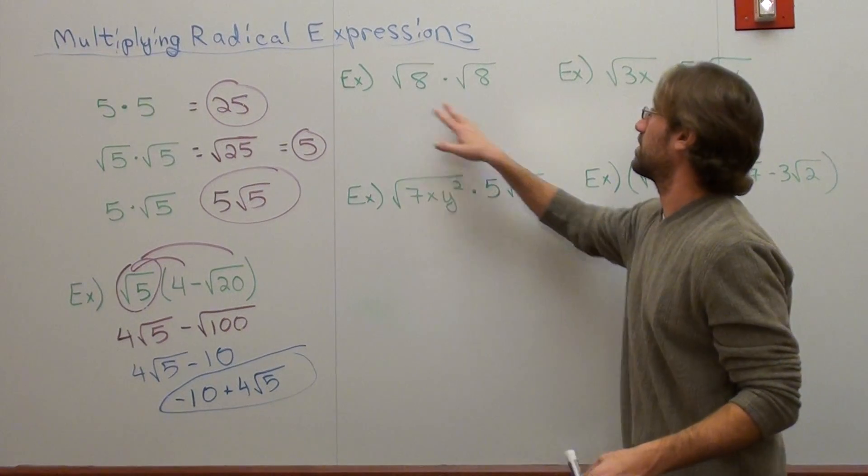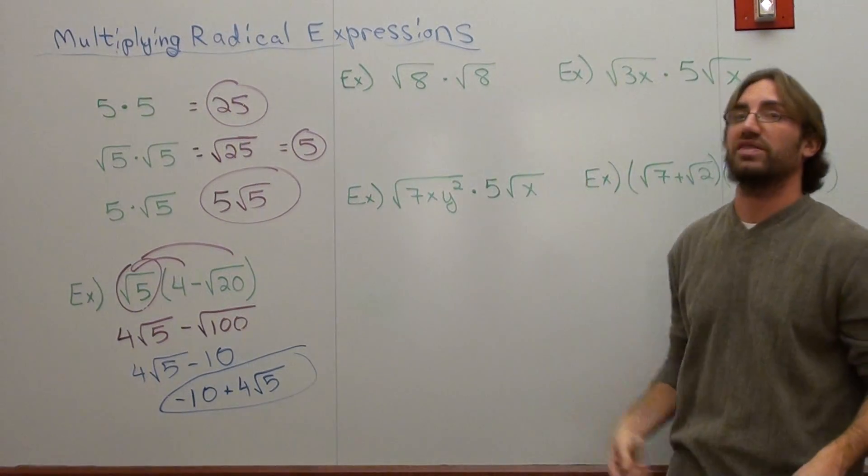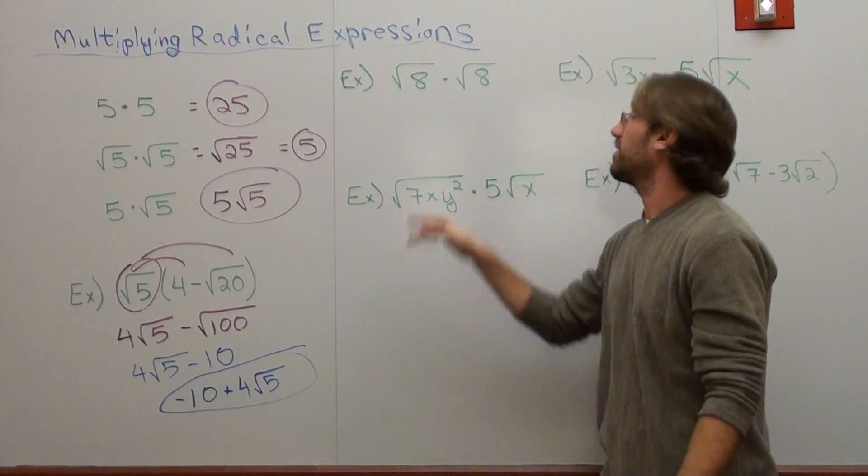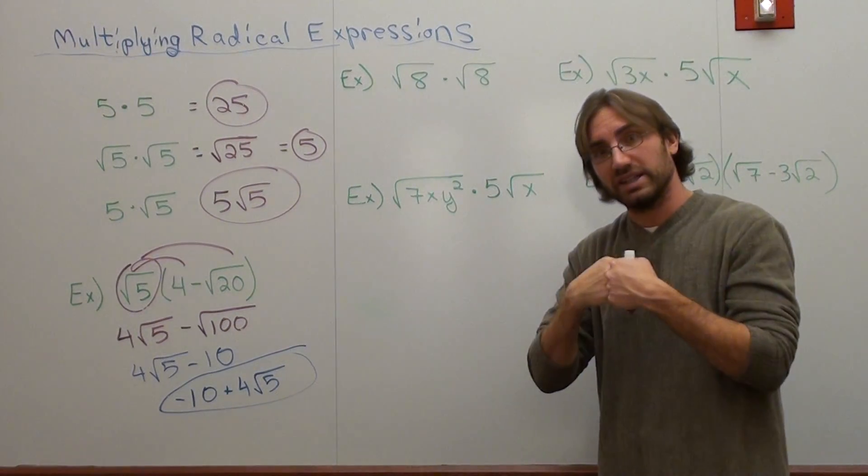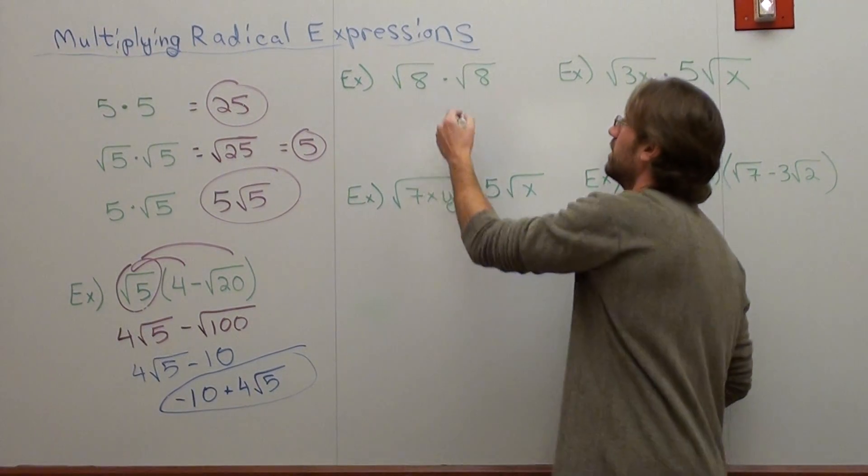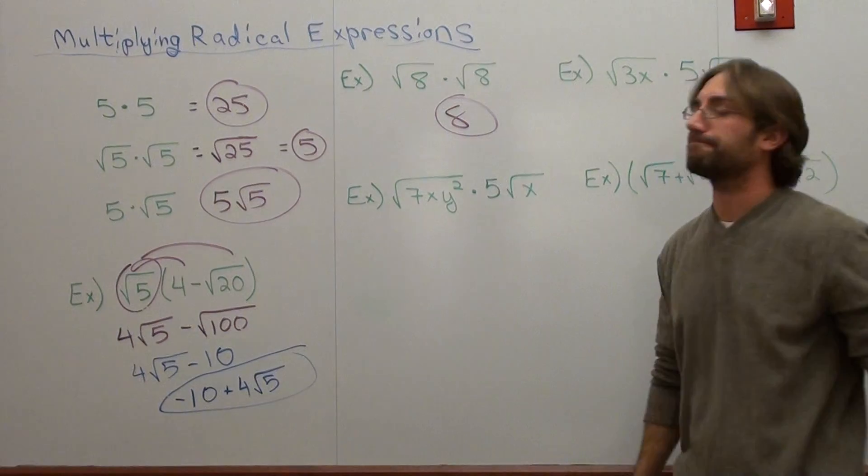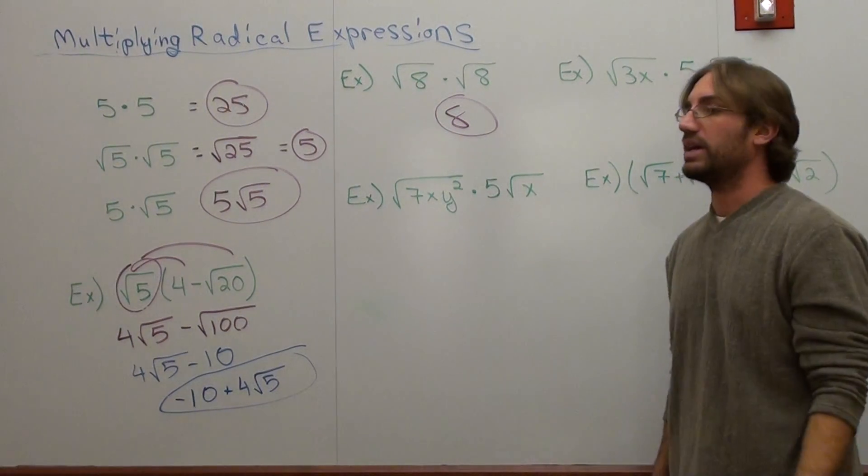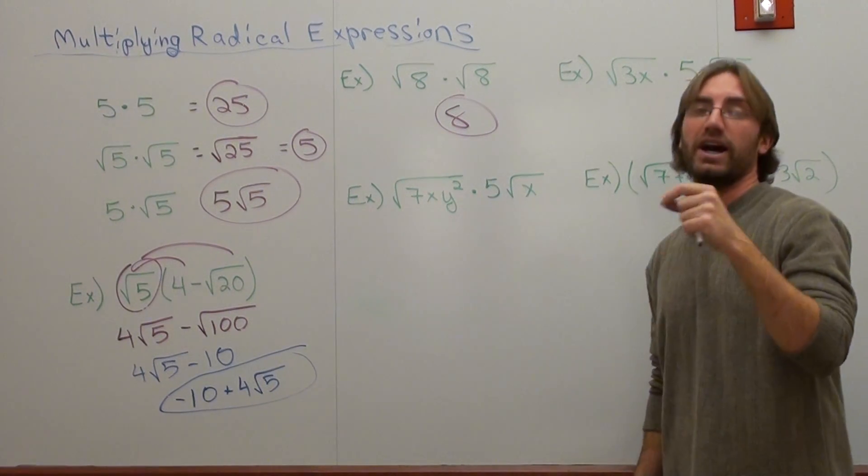So I've got these examples here where I've got the square root of 8 times the square root of 8. It's the square root of 64. But if you take the same number twice and you multiply it together, it's just the number on the inside. It's just 8. Very good idea to understand.